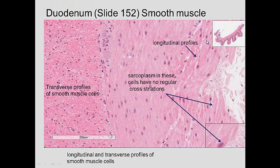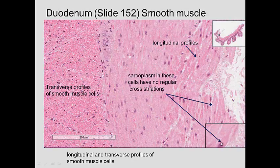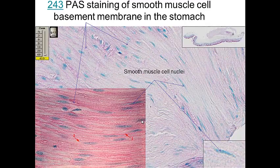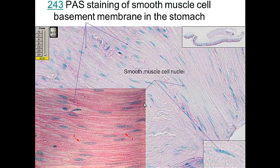Looking at the muscularis externa with H&E, we can see cross-sections of individual smooth muscle cells as well as longitudinal views of muscle cells with their nuclei and no striations. If you stain it with PAS (periodic acid-Schiff), which stains for a high concentration of carbohydrates, you can see that the basement membrane of smooth muscle cells is PAS positive, similar to what you see in epithelium.